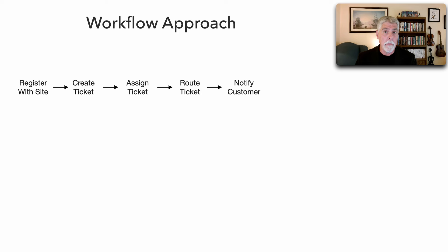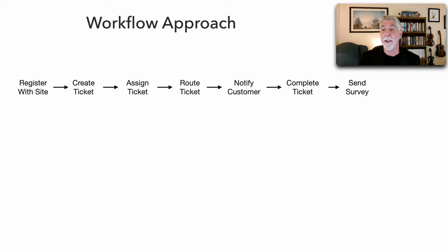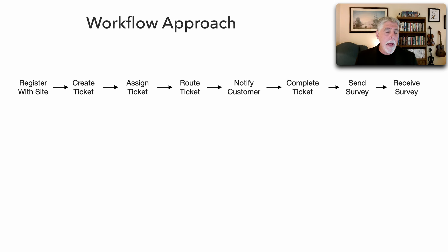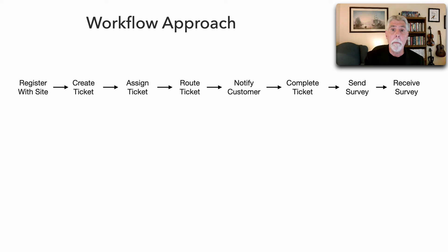The expert fixes the problem and completes the ticket. When a ticket is completed, we send a survey, and then hopefully we receive that survey back from the customer. This is the main happy path workflow. For any given system or product, we can take one of the major workflows, write out the major steps, and then ask who should do these — that 'who' being a logical component in the architecture.